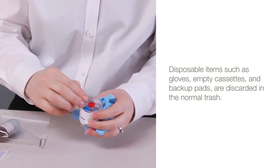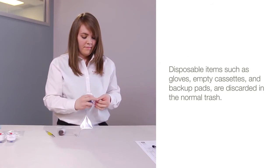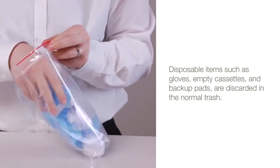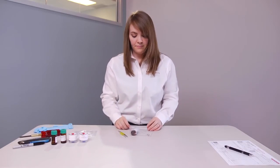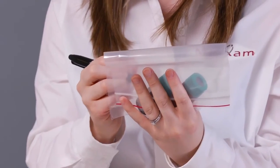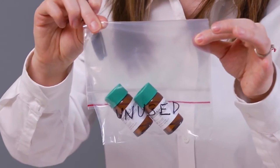Once all samples are complete, disposable items such as gloves, empty cassettes, and backup pads are discarded in the normal trash. Any extra solution vials must be disposed of according to regulations appropriate for the chemical agent. You can also return them to the laboratory clearly marked as unused.